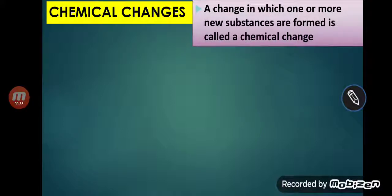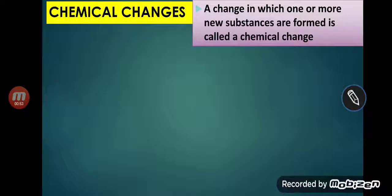What is a chemical change? A change in which one or more new substances are formed is called a chemical change. When two or more substances combine chemically and form new substances, that is called a chemical change.